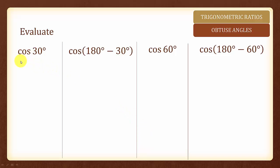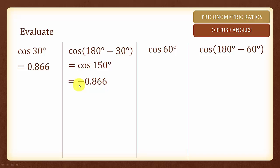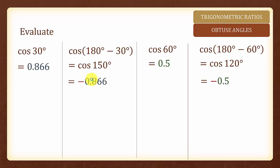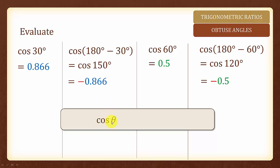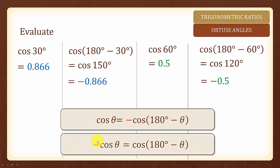Let's look at the examples for cosine. By pressing the calculator, cosine 30 is equal to 0.866 rounded off to 3 significant figures. Cosine 180 minus 30, which is equal to cosine 150, is equal to negative 0.866. Next, cosine 60 equals 0.5 and cosine 180 degree minus 60 degree, which is equal to 120 degree, is equal to negative 0.5. Do you see any patterns? Yes — given any angle theta, cosine theta is equal to the negative of cosine 180 degree minus theta, or equivalently, negative cosine theta is equal to cosine 180 degree minus theta.